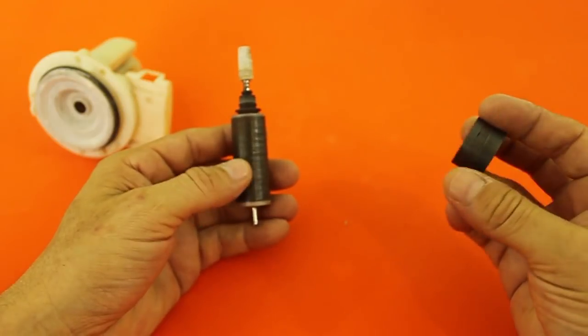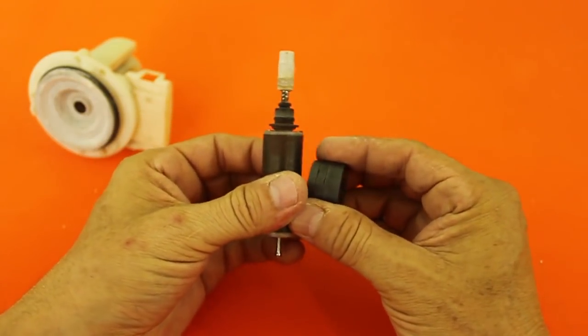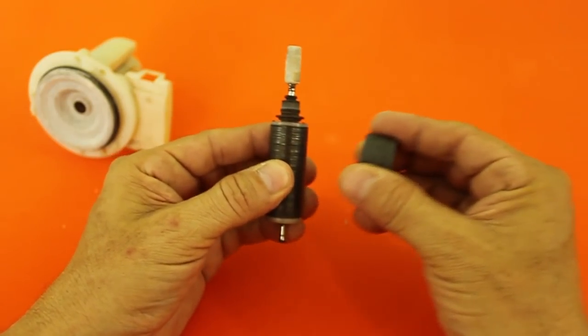Let's see, I have another magnet here and we have attraction, but if I turn it 180 degrees, we have repulsion.